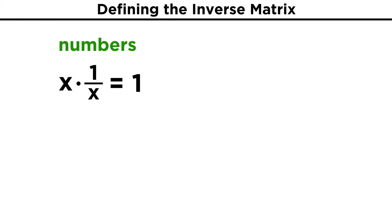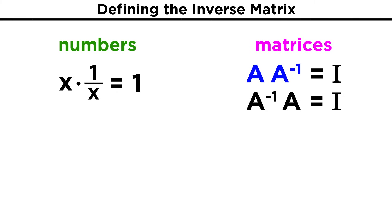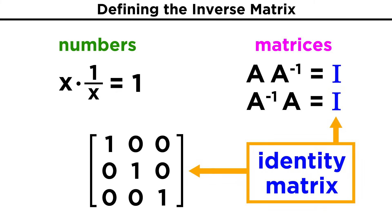We can recall that a number times its reciprocal equals one. Similarly, a matrix times its inverse, or the inverse times the original matrix, will yield an identity matrix — a square matrix with all zeros except ones across its main diagonal — which is kind of like the number one in matrix form. So in that sense, there is a correlation.